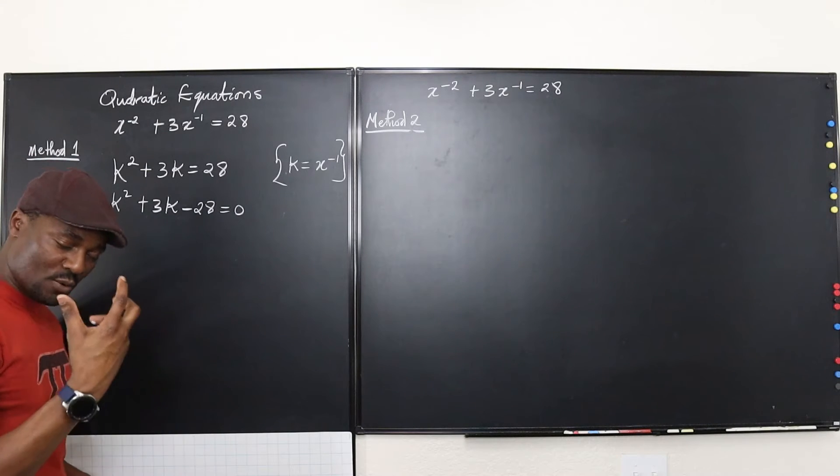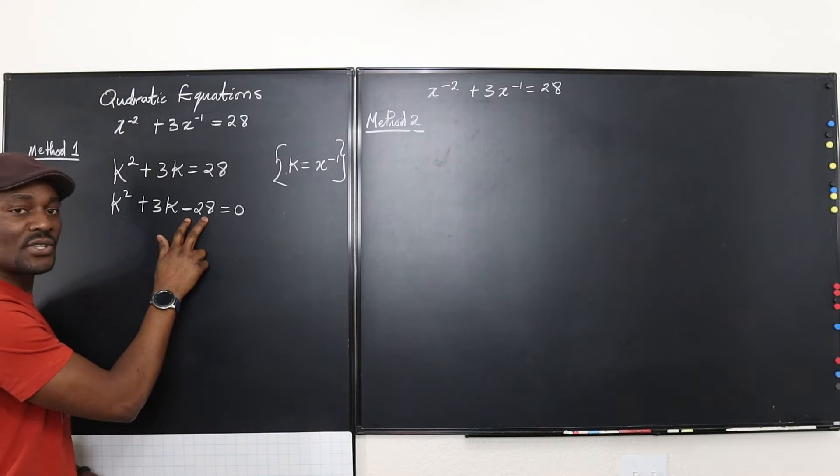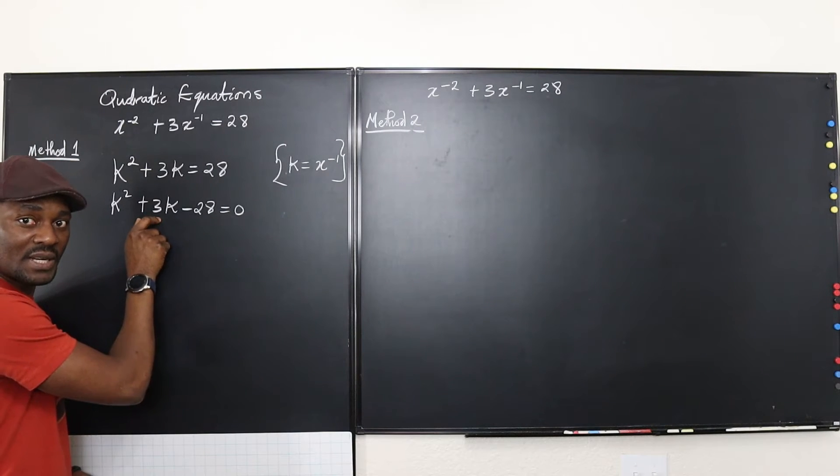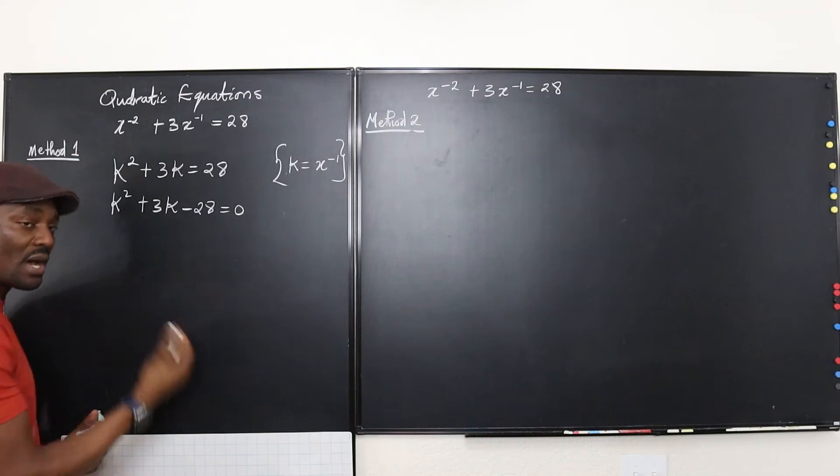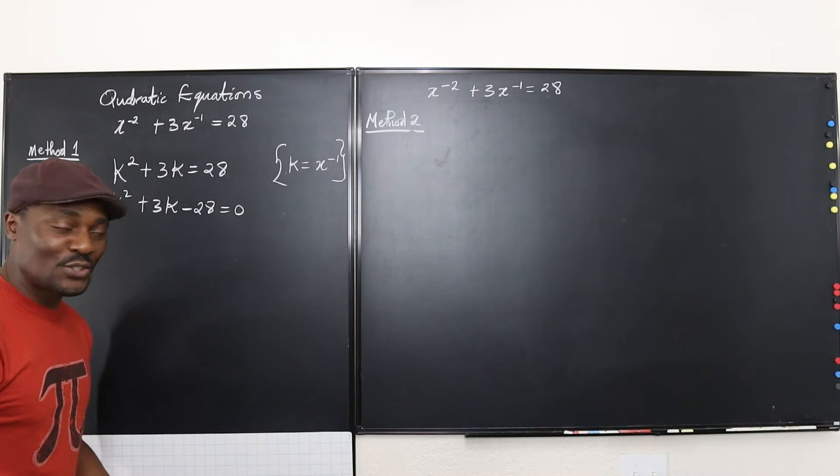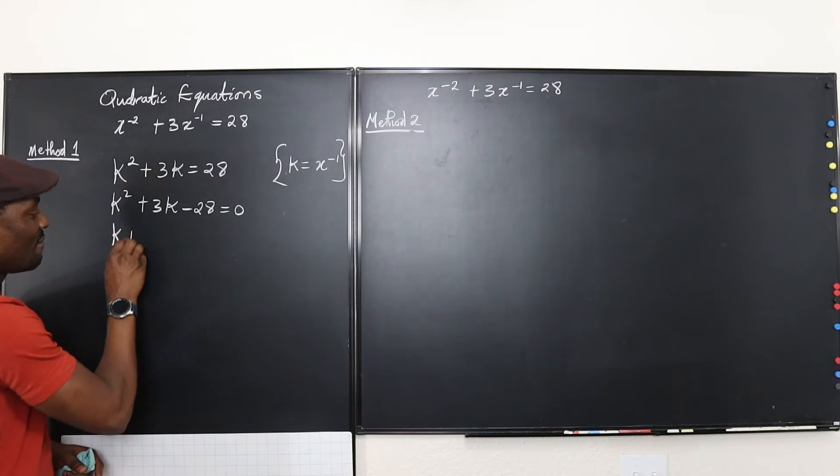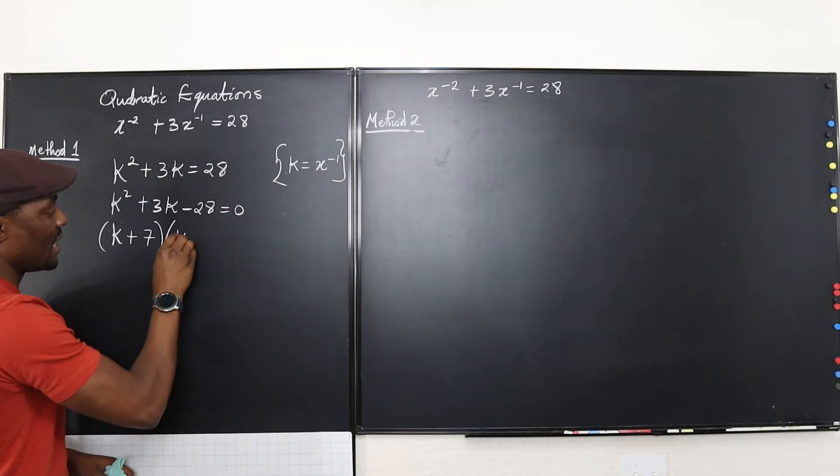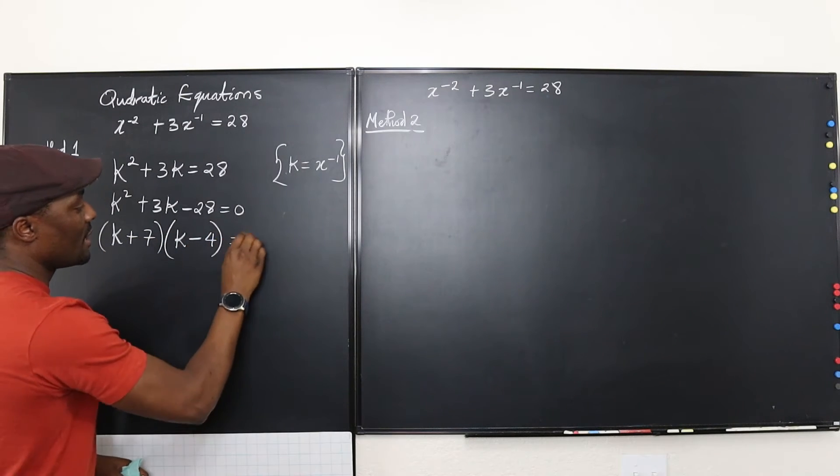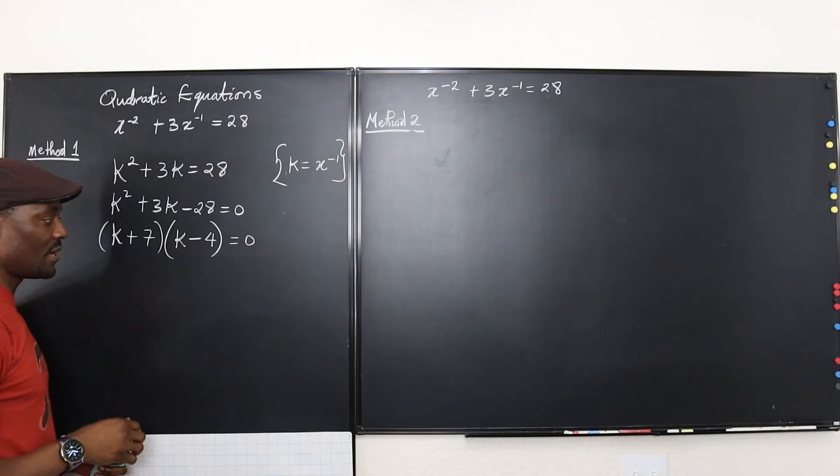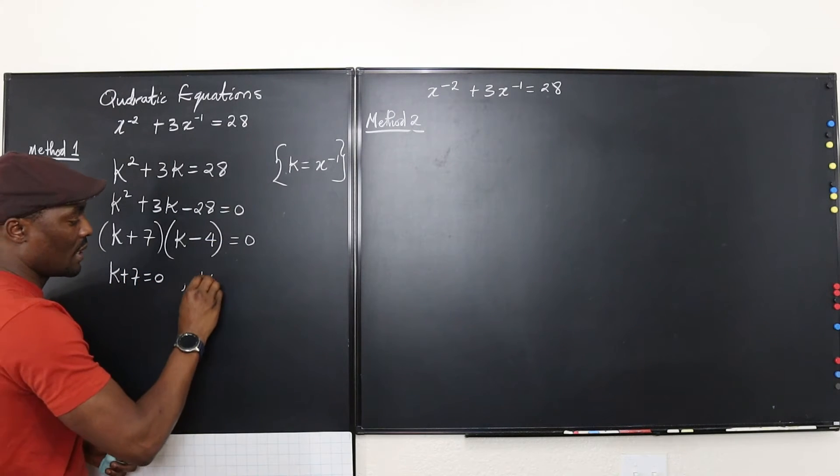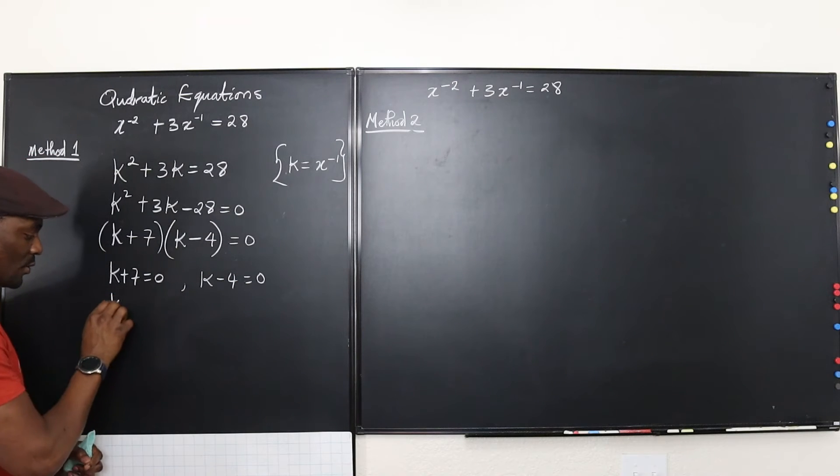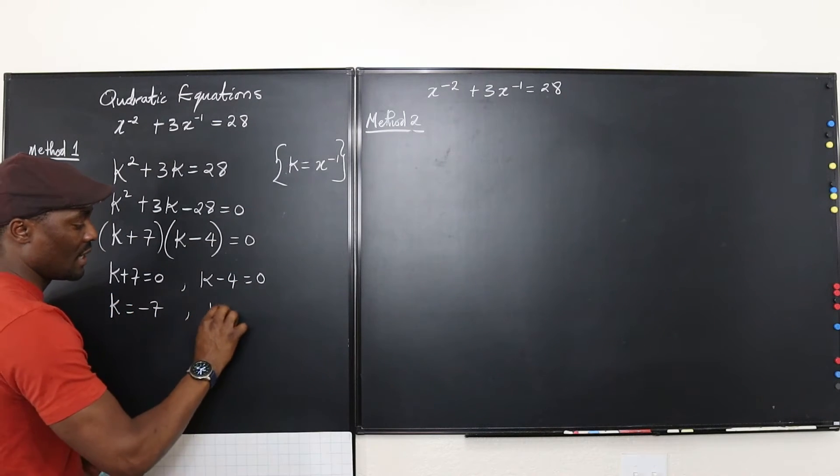How do we know what the factors will be? Well, the question is, what two numbers will you multiply to get negative 28? But when you add them together, you're going to get positive 3. Well, I know it's going to be positive 7 and negative 4. So I'm going to replace this and factor this into positive 7 and negative 4. So this is going to be (k + 7)(k - 4) = 0. That would be the factored form of this equation. And then we can isolate each of these and solve. So we have k + 7 = 0 or k - 4 = 0. It leaves us with k = -7 or k = 4.